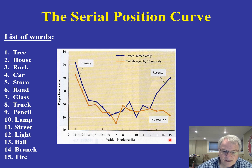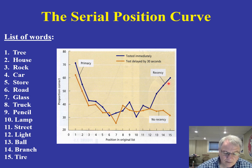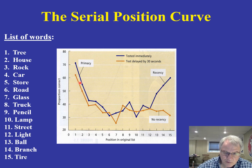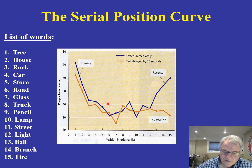What we'd find is that words at the beginning of the list — like tree, house, and rock — are remembered quite well. Words at the end of the list — like ball, branch, and tire — are also remembered very well. But words in the middle of the list — road, glass, truck, pencil, lamp — are really not remembered all that well. Those working in memory believe this represents a primacy effect: the early words had opportunity to be rehearsed and got into long-term memory. Words at the end represent a recency effect — they're still in short-term memory. Words in the middle are in limbo and aren't recalled well.